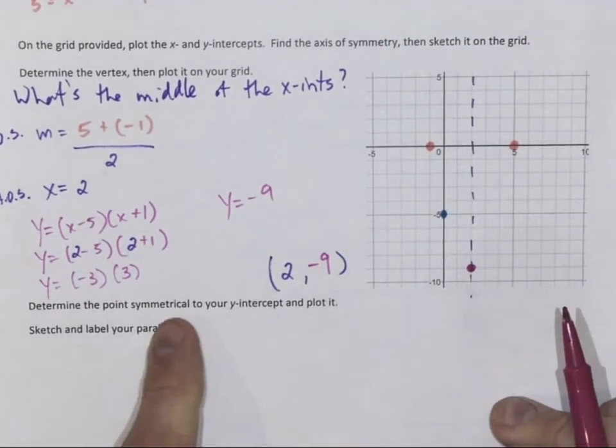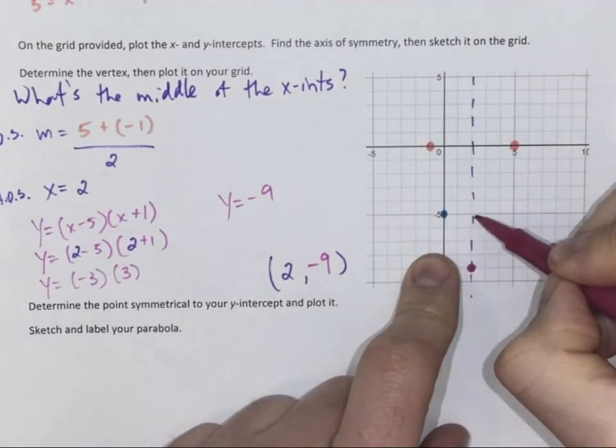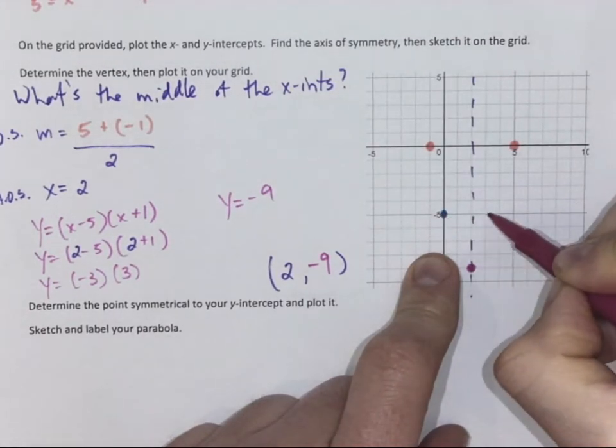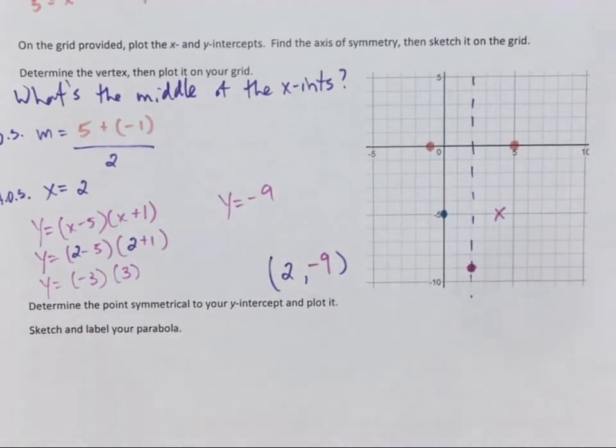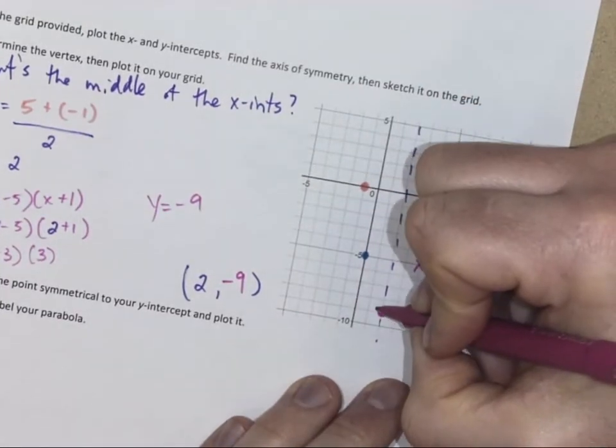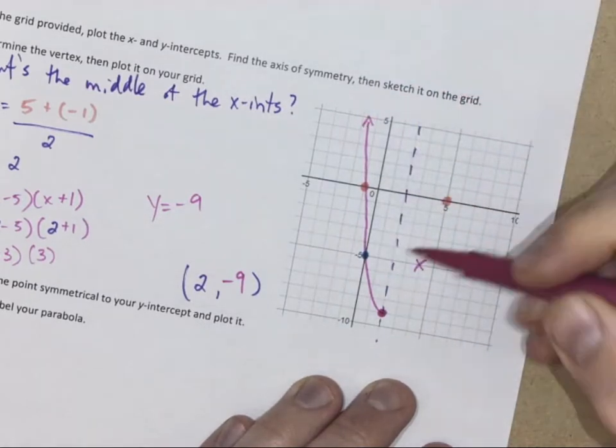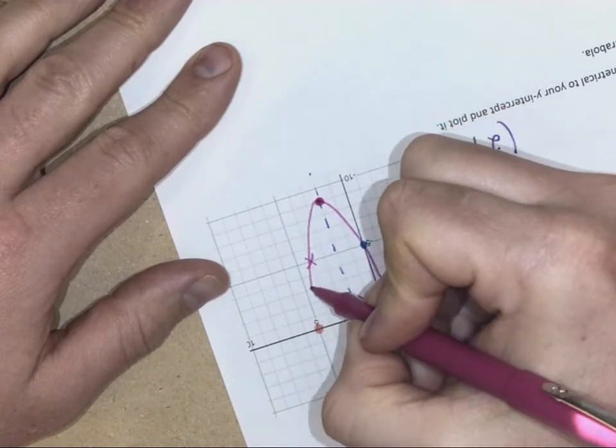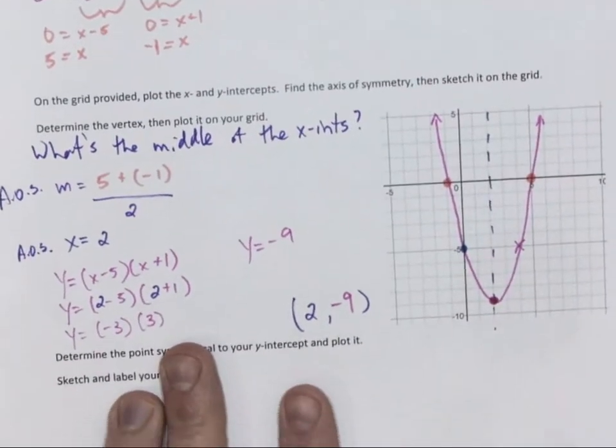But I can find a fifth point. If this y-intercept is 2 to the left of the axis of symmetry, the point at that same height, negative 5, will be 2 to the right. Because of that, I can now sketch my parabola. A curved V that continues to open up. Arrows on the end to show that it continues. This is a thing of beauty right here. And I've got my parabola.